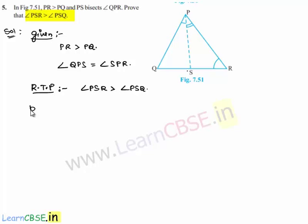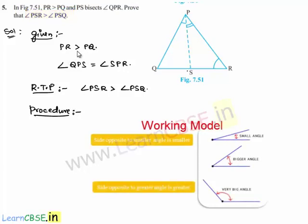Moving on to the procedure. By utilizing the given relation that PR is greater than PQ, and applying the concept that the angle opposite to the smallest side will be smaller and the angle opposite to the greatest side will be greater, we can get a relation between angle Q and angle R. Then, by considering triangles PSQ and PSR and establishing relations between their angles, we can prove that angle PSR is greater than angle PSQ.